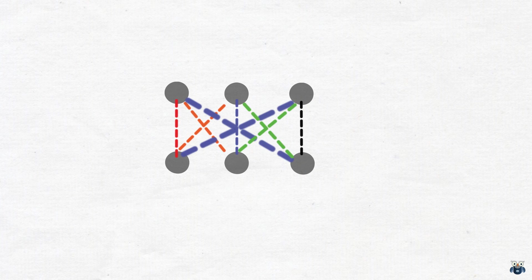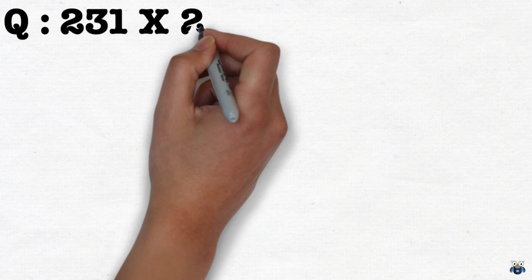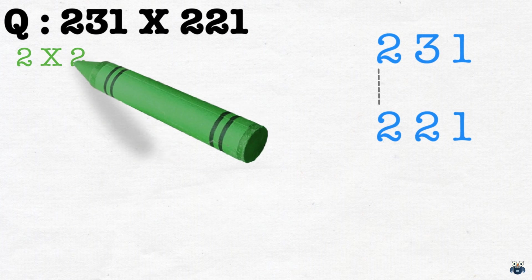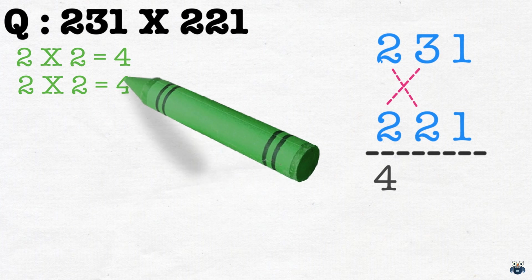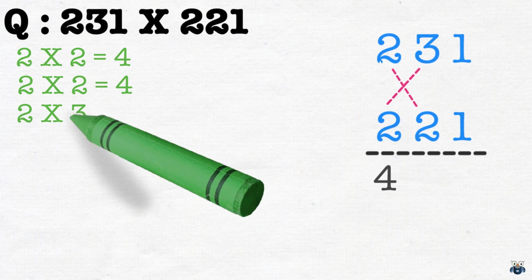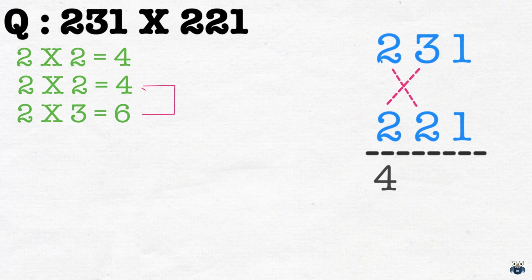Alright, let's apply this logic to a multiplication problem. What is 231 times 221? We first write down the numbers one below the other like this. Starting from the left, we first multiply these two numbers. 2 times 2 is 4. We then move rightwards and cross multiply the next 4 numbers. 2 times 2 is 4 and 2 times 3 is 6. Adding both results, we get 10. Let's write that down.